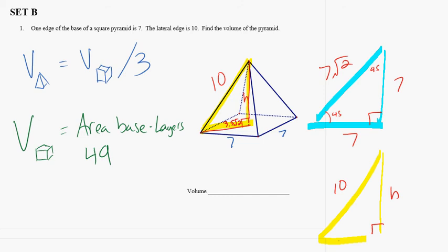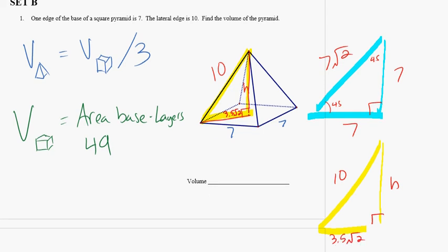So if I do the Pythagorean theorem here, I can find H. 10 squared equals H squared plus 3.5 root 2 squared. 100 equals H squared plus 24.5. So I know H squared equals 75.5. Now you get H equals 8.69.